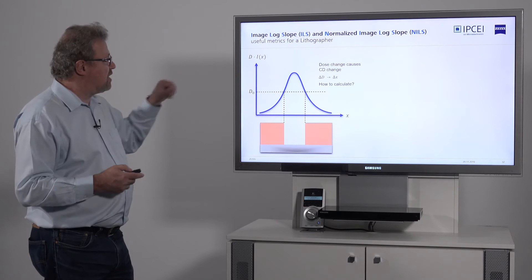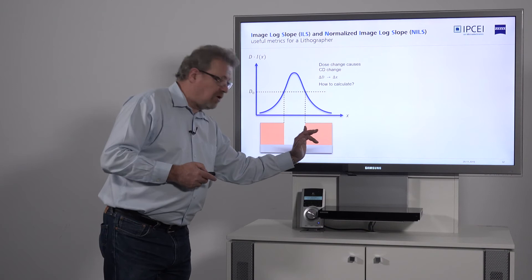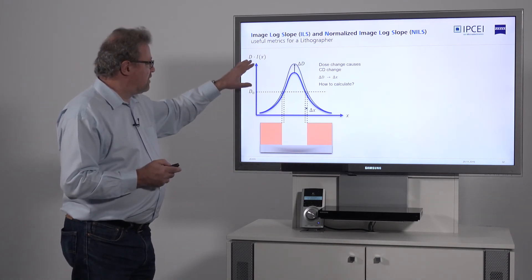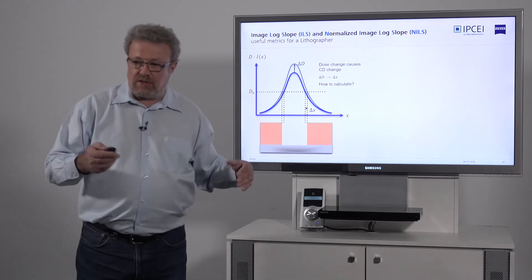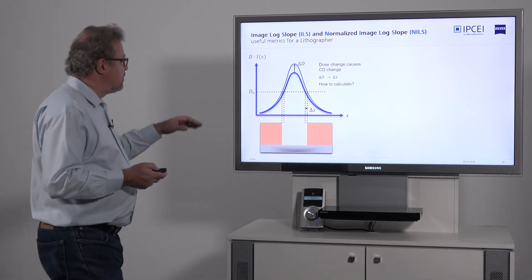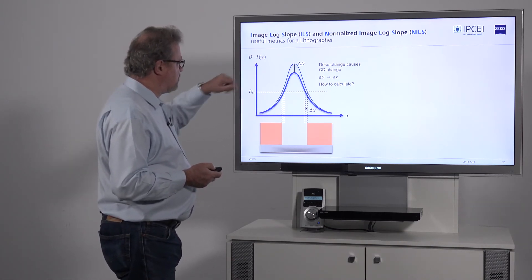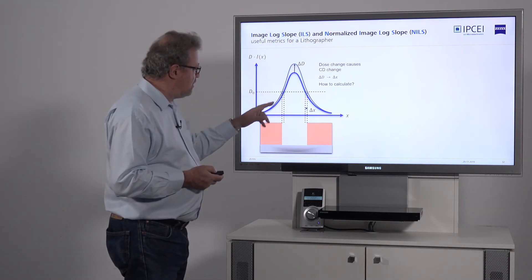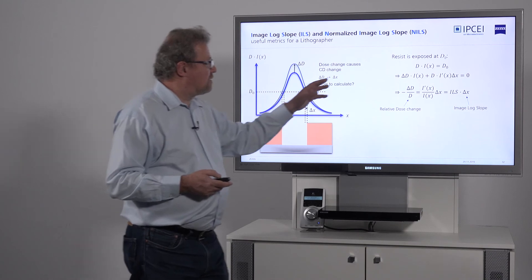If we now change the dose, it will change the size or where this edge is going. Typically, lithographers use the normalized aerial image, which is unitless. You divide the aerial image by the aerial image you get if you have no feature. Then the actual aerial image is the dose times that normalized aerial image. So we change our dose, the aerial image gets brighter, which means our edges will move a little bit.